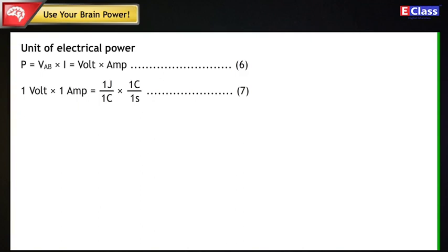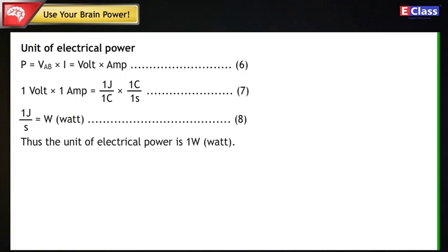Statement 7: 1J/S = W Watt (Statement 8). Thus, the unit of electrical power is 1 Watt.